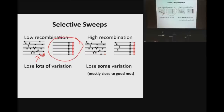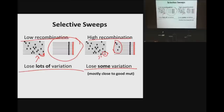In contrast, if you have higher recombination, you still see some hitchhiking close to the adaptive mutation. But as you go further away, some of these other sites persisted because they were able to recombine onto the spreading chromosome. So in regions of higher recombination, selective sweeps only cause you to lose some variation, whereas in regions of lower recombination you lose a lot. The place where you lose variation in high-recombination regions is mostly close to the good mutation.